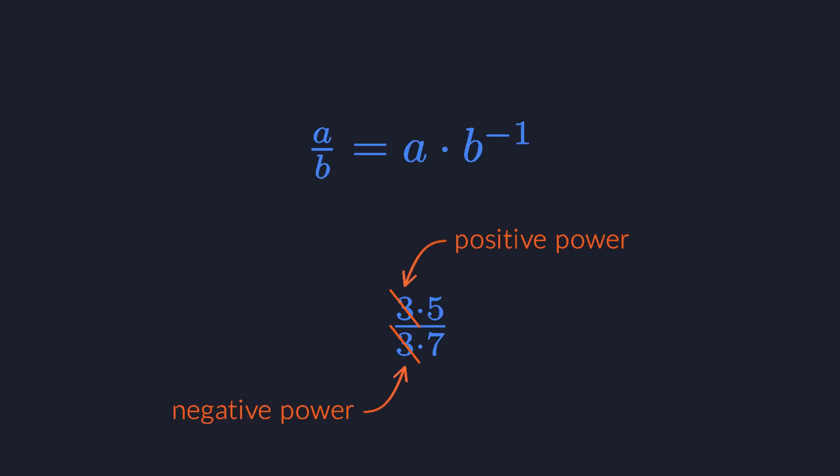This is completely analogous to the position vectors earlier, only this time with multiplication instead of addition. So you see that the invariance of anti-symmetric things carries very far throughout math and physics.